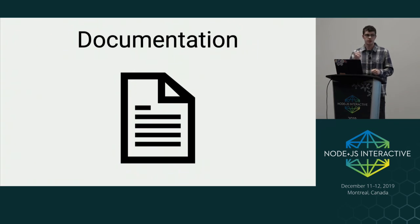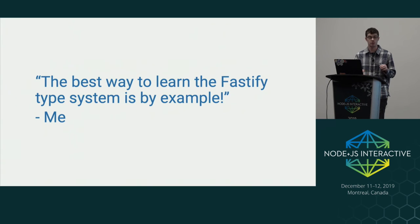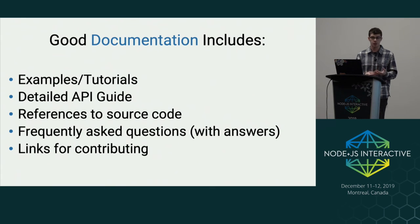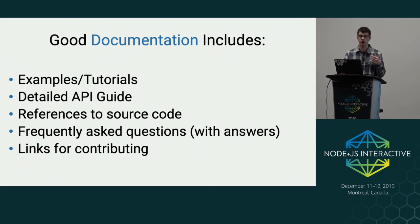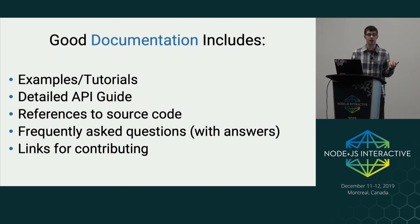Documentation is the next piece. As much as writing a great type system is fun, you have to write docs. The best way to learn the Fastify type system is by example, and the best thing you can do for your users is define as many examples as possible. You should also include a detailed API guide — not identical to your existing API guide, but one covering the type definitions themselves: what all the generic properties are and how they'll be used. References to the source code are really important, especially in the TypeScript realm, so users can inspect types and see what's expected.